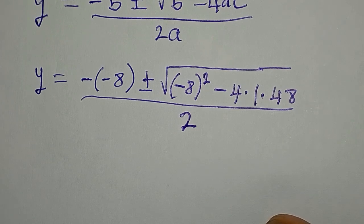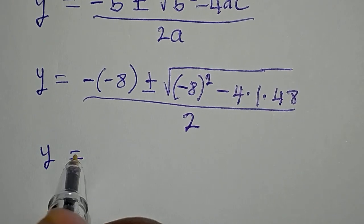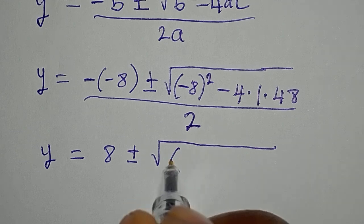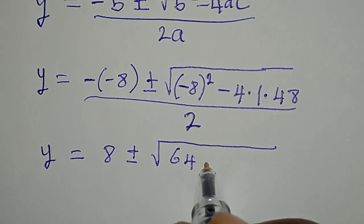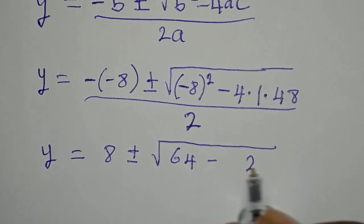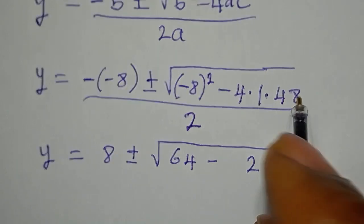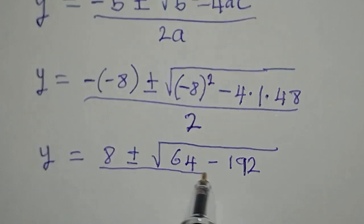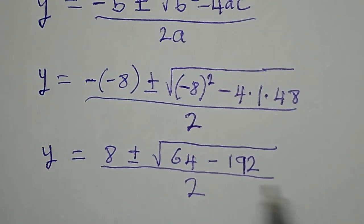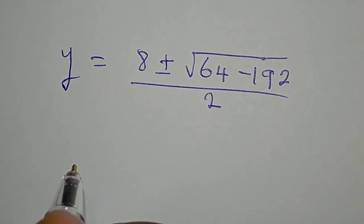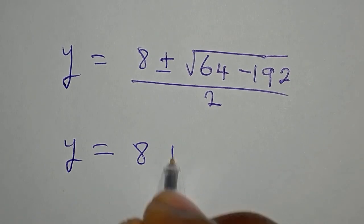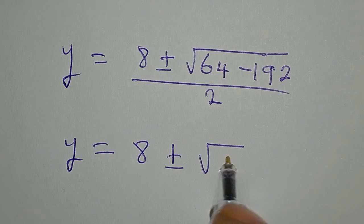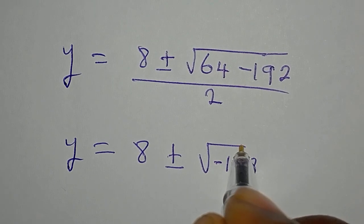Continuing: y equals 8 plus or minus the square root of — minus 8 squared gives 64, then 4 times 1 times 48 gives 192. So inside the square root we have 64 minus 192, which is negative 128, all divided by 2.